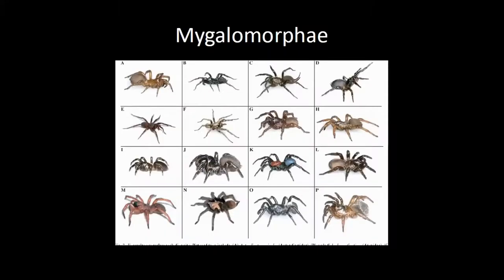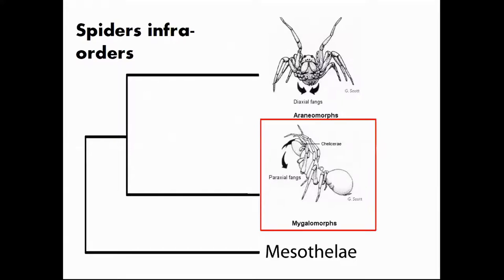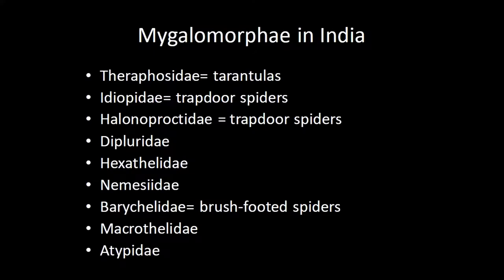Here is the diversity of mygalomorph spiders — so many shapes, sizes, and body types. What distinguishes mygalomorphs from other spiders is how the chelicerae, the fangs, are oriented. It is a slightly more primitive way of capturing prey or biting. If you see a spider from the front, in Araneomorphae you can see the fangs; in tarantulas, the fang orientation is downwards and inwards. In India, we have several families — many have been changed in recent years, with families split up, and taxonomy keeps changing, especially with invertebrates where there is a lot more work to be done.